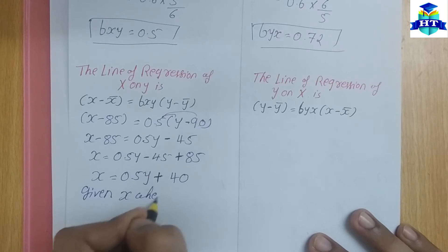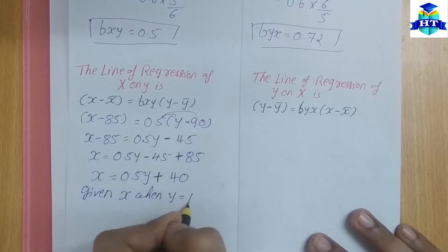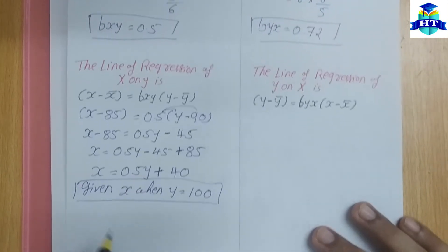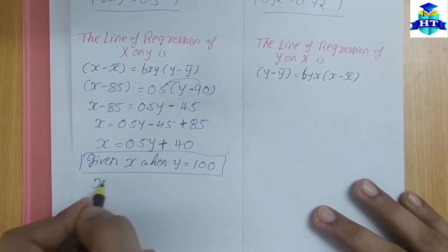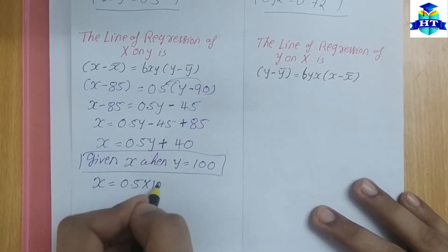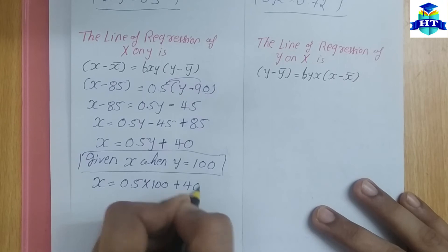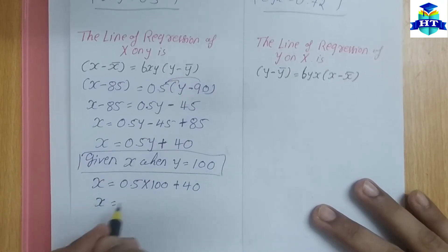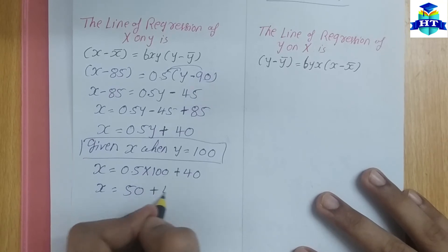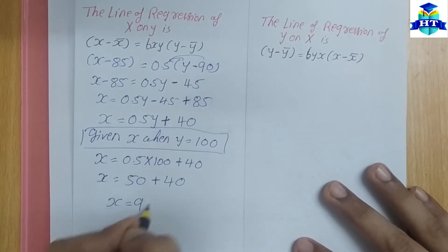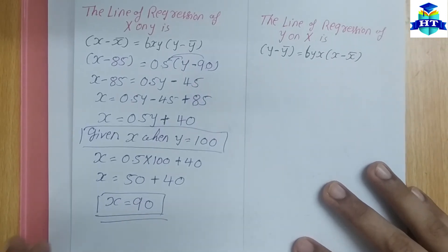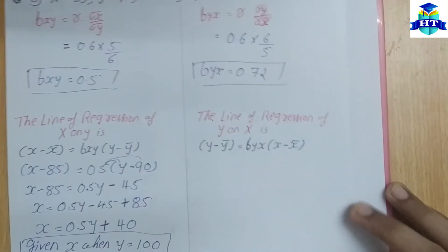Now, given X when Y equals 100, we substitute into the regression line: X equals 0.5 multiplied by 100 plus 40, which gives 50 plus 40, so X equals 90. You can check this answer in the textbook.